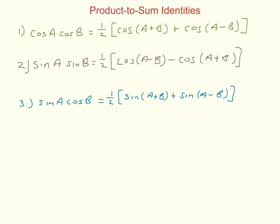The product to sum identities — there are three of them. Number one: cosine of a times cosine of b equals one-half times the cosine of a plus b plus the cosine of a minus b. Number two: sine of a times sine of b equals one-half times the cosine of a minus b minus the cosine of a plus b. Number three: sine of a times cosine of b equals one-half times the sine of a plus b plus sine of a minus b. With these identities, you take a product and express it as a sum.